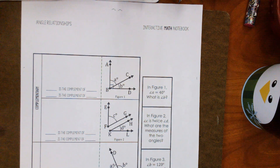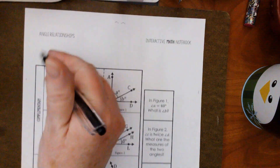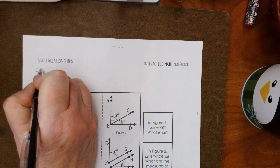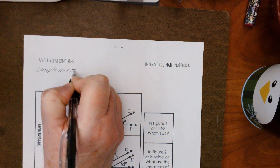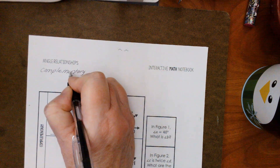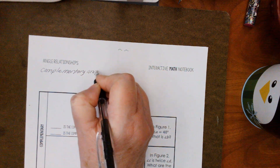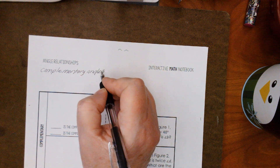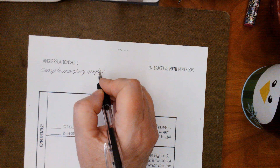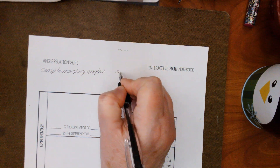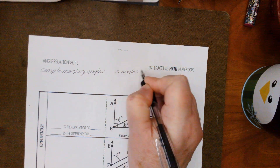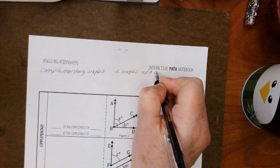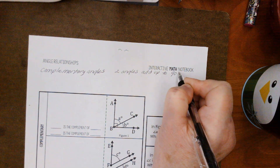So the complementary angles — I'm going to write this so you can see it — complementary. Those are angles when you have two angles that add up to 90 degrees.